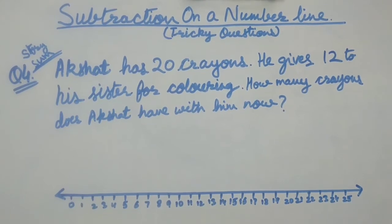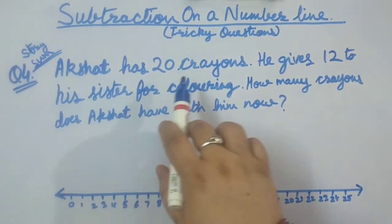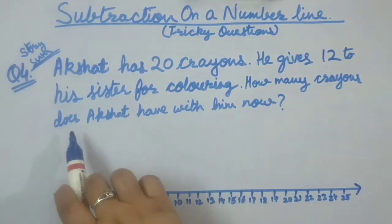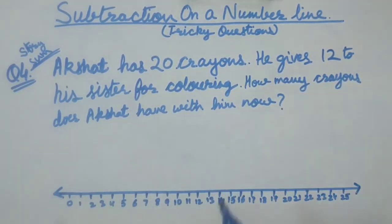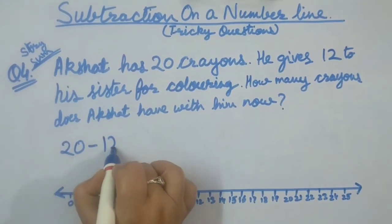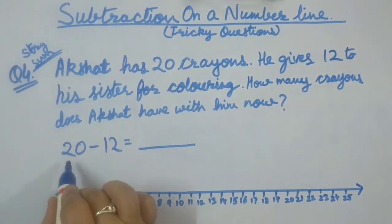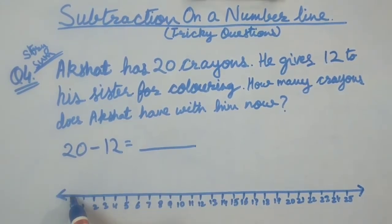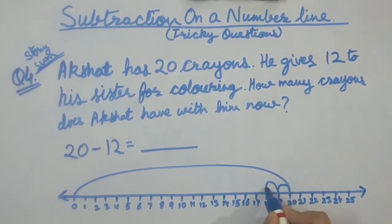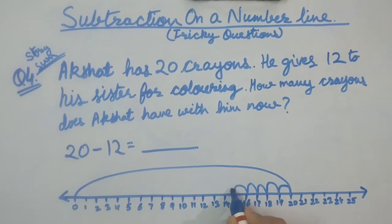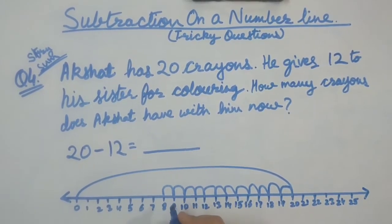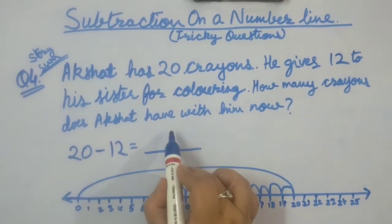Question number 4 is a story sum. Akshat has 20 crayons. He gives 12 to his sister for coloring. How many crayons does Akshat have with him now? We will take out the question. Akshat had 20 crayons. He gave 12 to his sister. How many were left? 20 minus 12 equals to dash. First step 0 to 20. Backwards steps, counting 1 through 12. So we reach number 8.